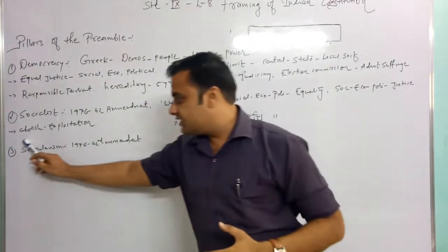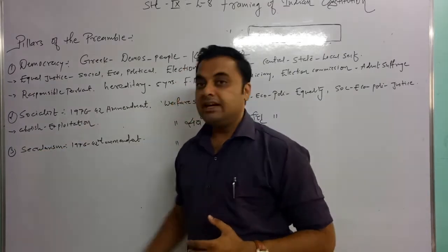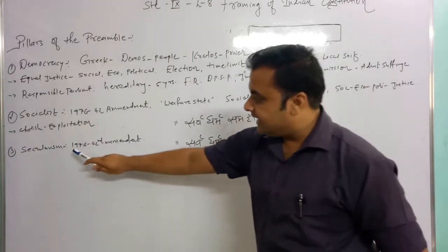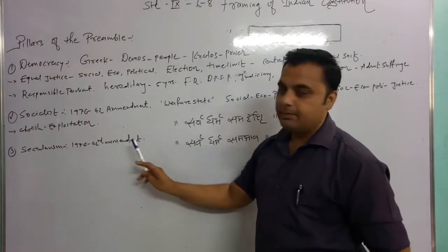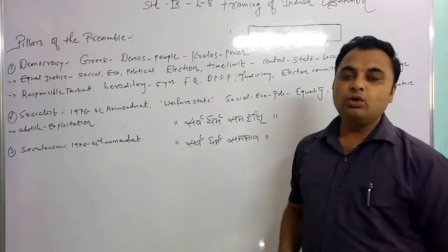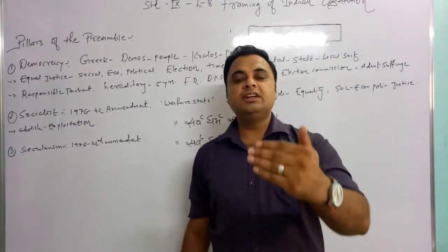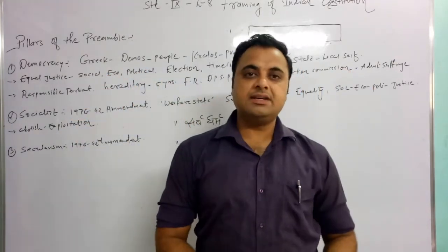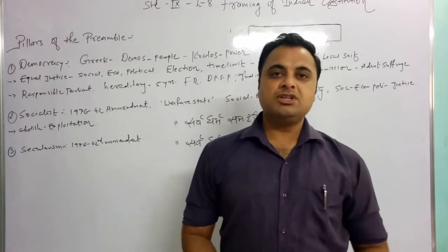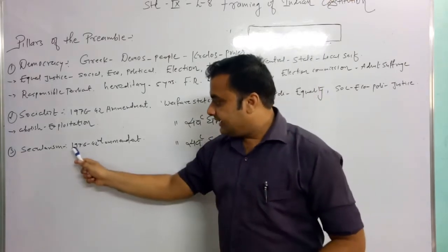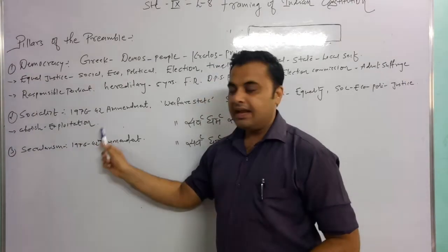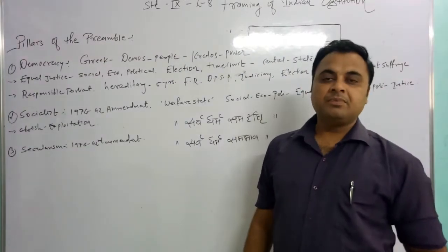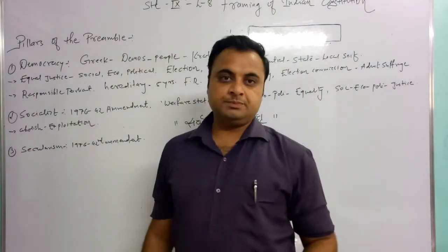The third pillar is secularism, that is dharma nirpeksh. This word was also added to our constitution through the 42nd amendment in 1976. The amendment process goes from Lok Sabha to Rajya Sabha, and after the President's signature the amendment becomes possible in our constitution. So in 1976, the 42nd amendment added the word secularism to our preamble.